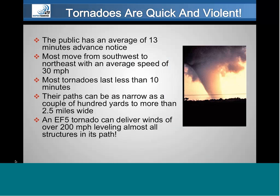Tornadoes are really quick and violent. The average public person has 13 minutes of advance notice. Most of these storms move from southwest to northeast, with an average speed of 30 miles an hour. If you're heading away from the storm in a car, 30 miles an hour is not a big deal — but heading toward it on foot, that becomes a really fast-moving, devastating impact. They last less than 10 minutes on average, making them totally different from coastal storms. They're sudden, quick, and devastating — we've all seen pictures where one side of the street is completely decimated while the other is virtually untouched. The swath can go from a couple hundred yards wide to over two miles.